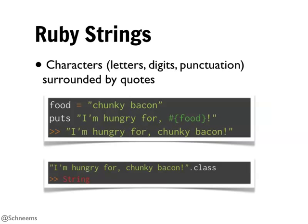Ruby strings are just characters - they're going to be surrounded by quotes, much the same as in many programming languages. We can do character substitution. In this case, we are assigning a string 'chunky bacon' to the variable food, then outputting that to standard out using puts and substituting food, so the output is 'I'm hungry for chunky bacon.' You can call .class on any object, and it will tell you what type it is - in this case, String. Everything inside of Ruby is going to be an object.